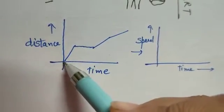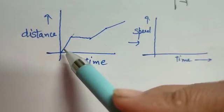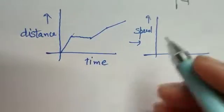If you see carefully, we have uniform motion here. The body is covering equal distances in equal intervals of time, which means constant speed.